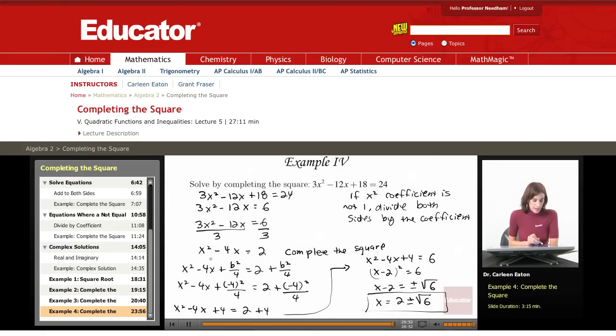Once I was there, then I went about completing the square by adding this term to both sides, getting a perfect square trinomial, which is this, and taking the square root of both sides to get my solutions.